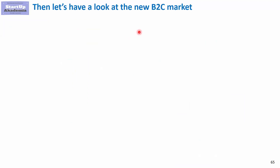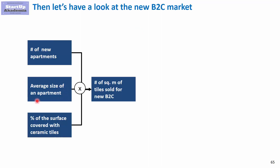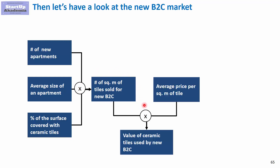For the B2C new apartments market, we use different drivers. The key driver is the number of new apartments built — this is publicly available data. We then assume the average size of the apartment and what percentage of the surface is covered with ceramic tiles. This gives us the square meters of tiles sold, and multiplying by average price gives us the market value.